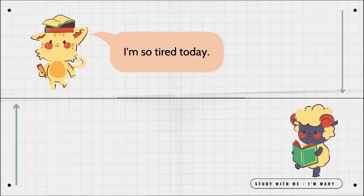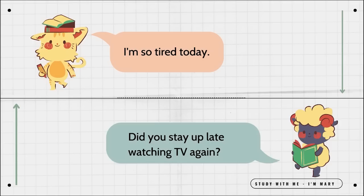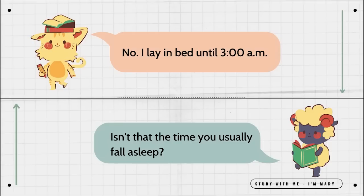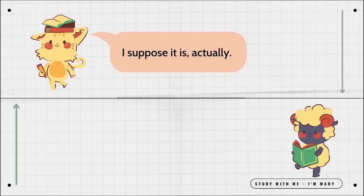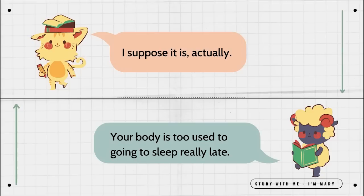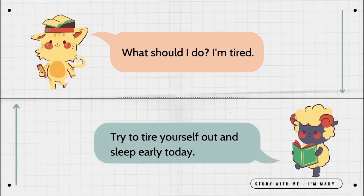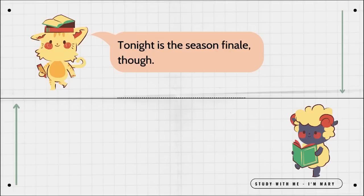I'm so tired today. Did you stay up late watching TV again? No. I tried to sleep at 11 p.m. And you couldn't fall asleep? No. I lay in bed until 3 a.m. Isn't that the time you usually fall asleep? I suppose it is, actually. Your body is too used to going to sleep really late. What should I do? I'm tired. Try to tire yourself out and sleep early today. Tonight is the season finale, though. You're hopeless.